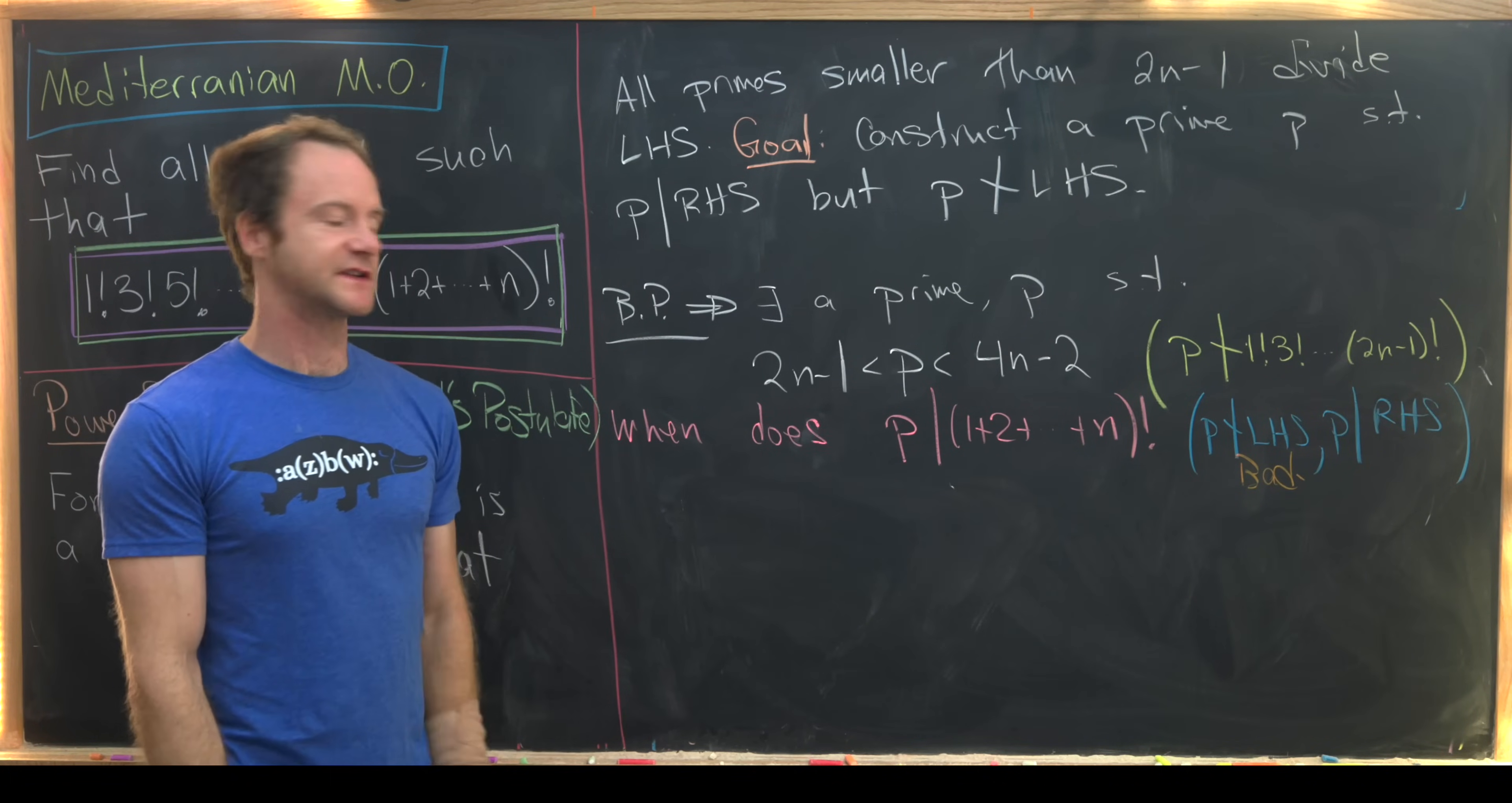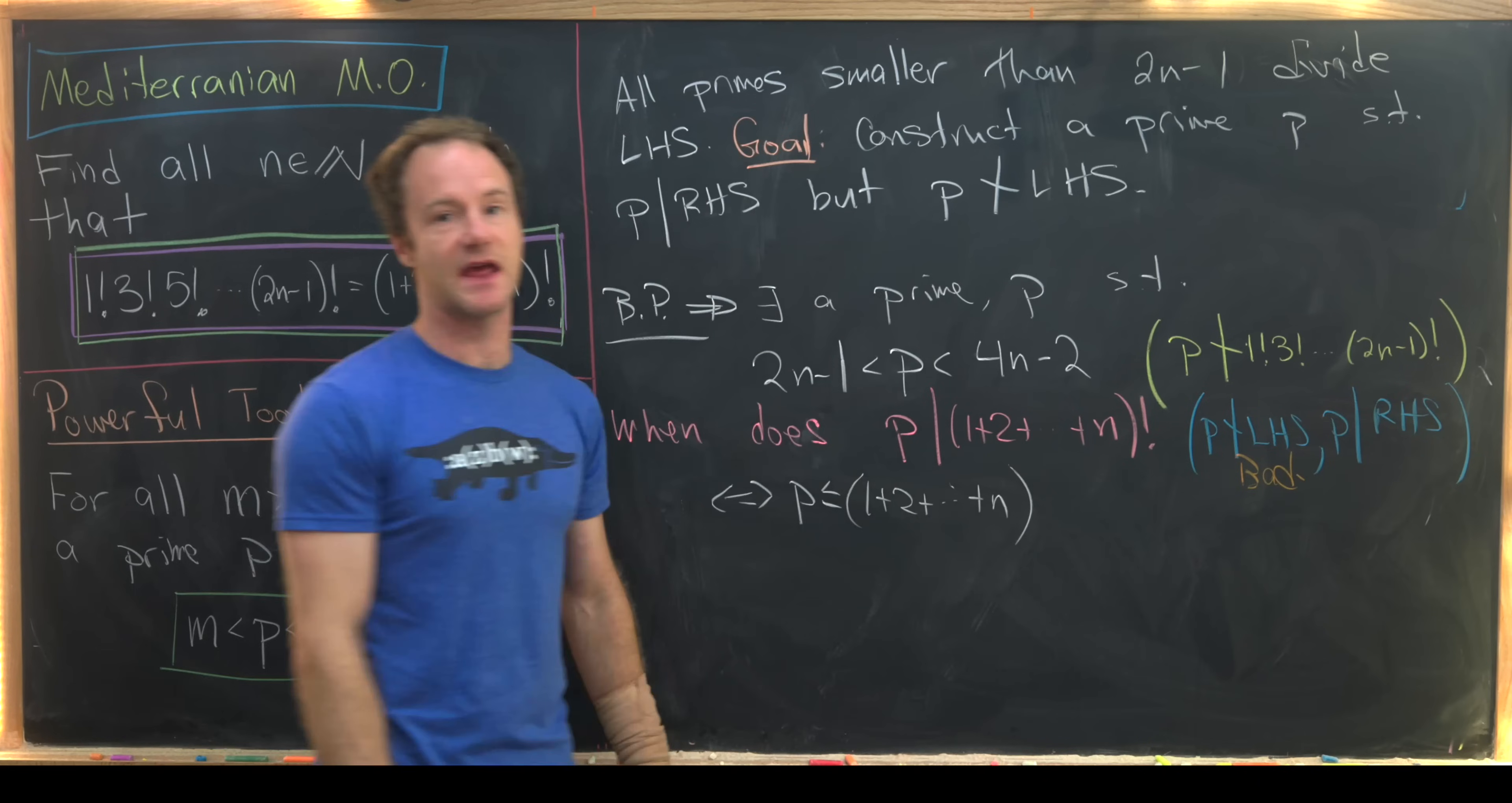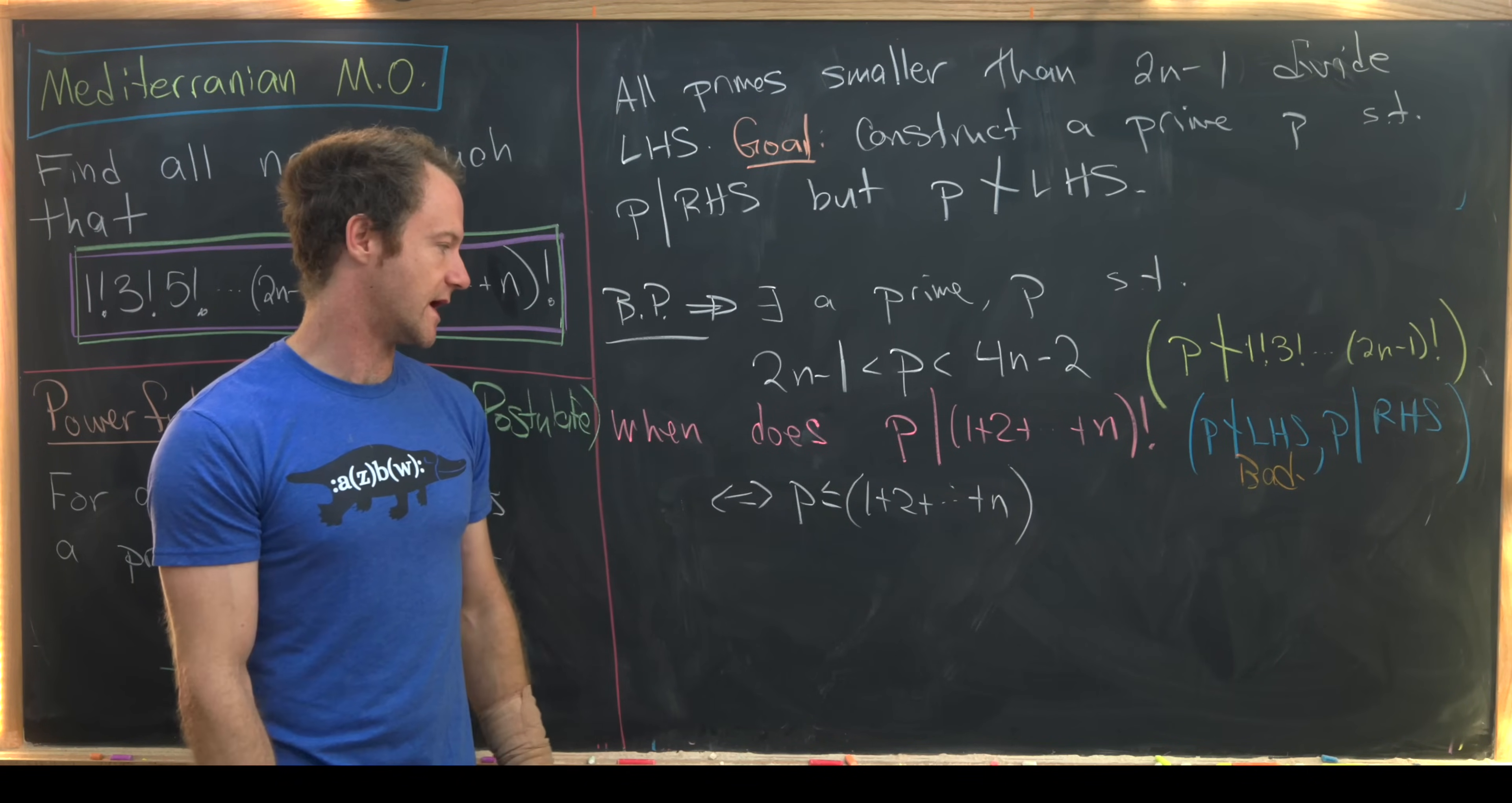So now let's tackle this question in pink. Notice that p will divide this factorial if and only if p is less than or equal to this triangular number 1 plus 2 all the way up to n. Why is that? Well, that's because when you take this factorial you're going to have a product of all of the numbers that are less than or equal to this including whatever prime. We'll pass that prime along the way.